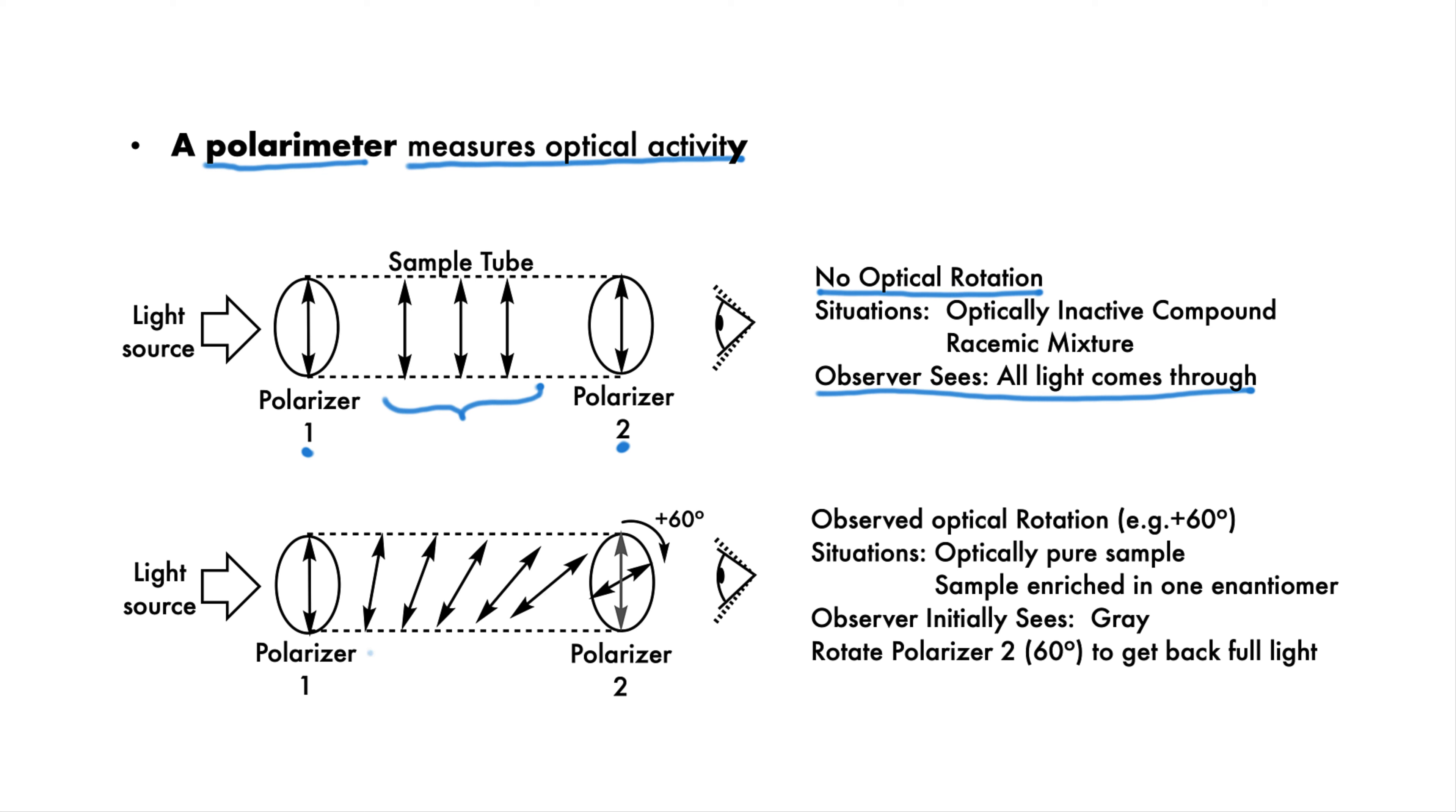In the second scenario, there is a molecule in the sample tube which causes optical rotation. We say the sample is optically active. If the second polarizer remains aligned with the first, then the observer sees gray. Gray is between full light and full dark. We can then rotate the second polarizer to get all the light back. In this example, we need to rotate the second polarizer 60 degrees in the positive direction. This value is called the observed optical rotation.